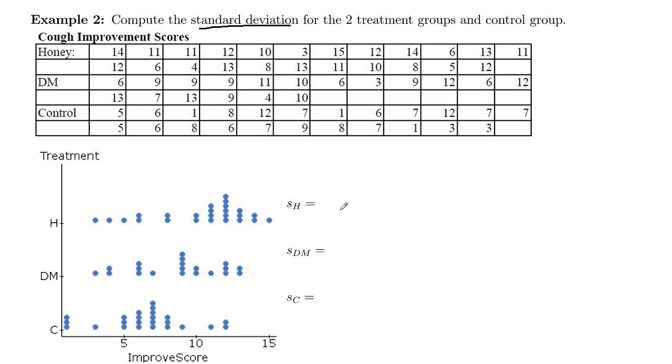Okay, so you should have gotten 3.39, 2.86, and 2.90.